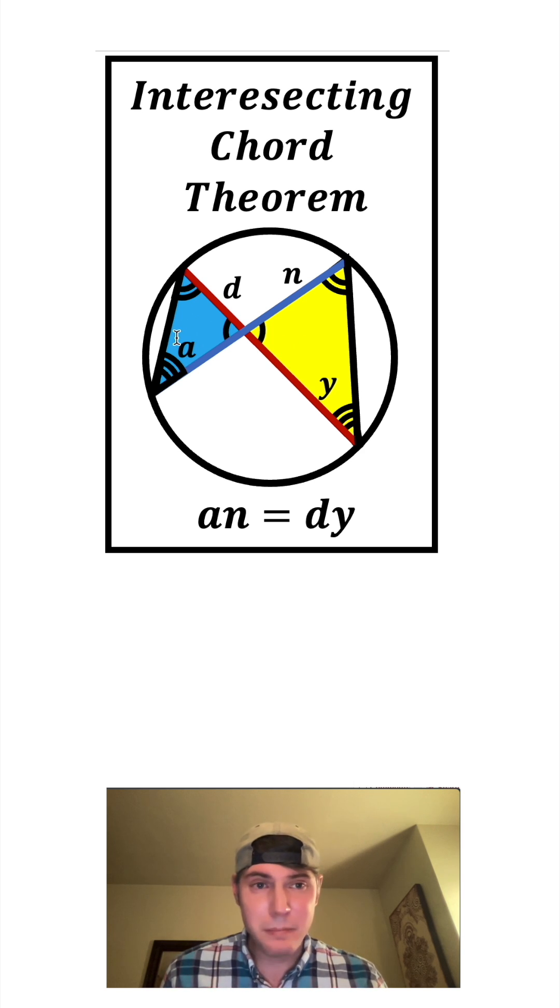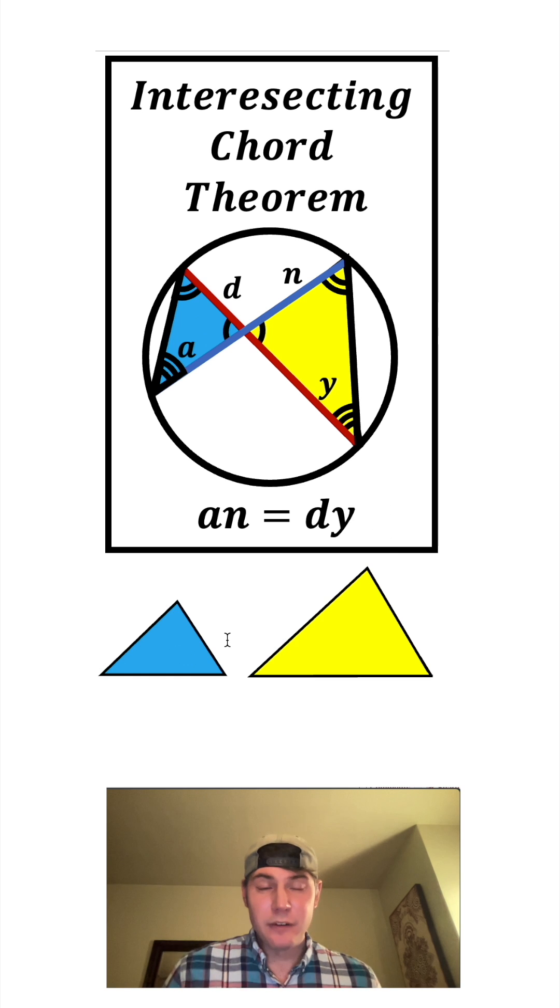So now we have two triangles with three pairs of corresponding congruent angles. That means they are similar triangles. If we look at the relationships between corresponding side lengths, they'll be proportional.